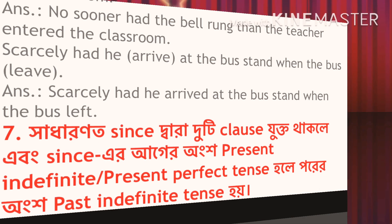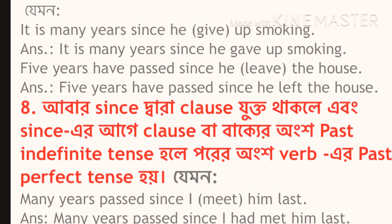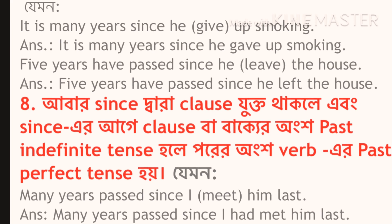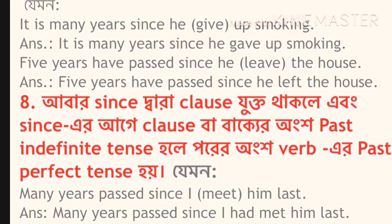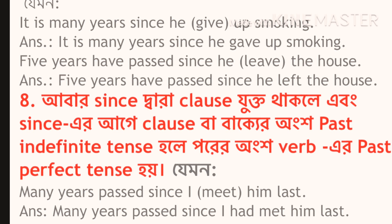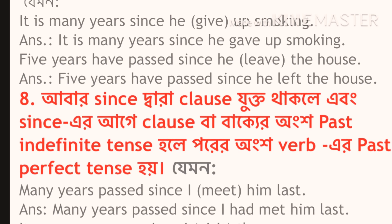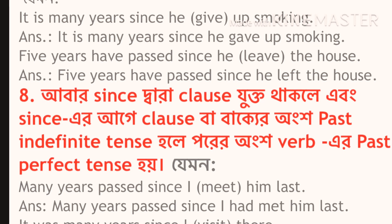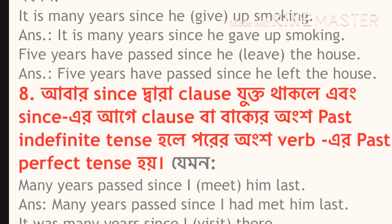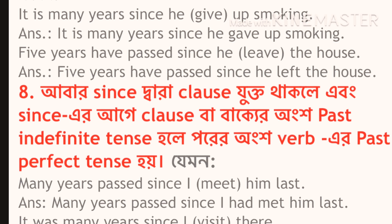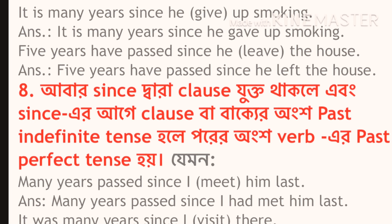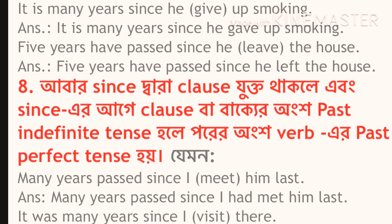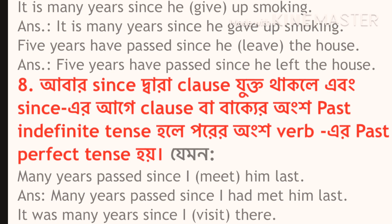We can see here: 'It is many years since he gave up smoking.' This is rule number 7 or 8 — the 'since' rule. Another example: 'It is many years since we met him last.' This is rule number 8, where 'since' connects a present tense clause with a past tense clause.